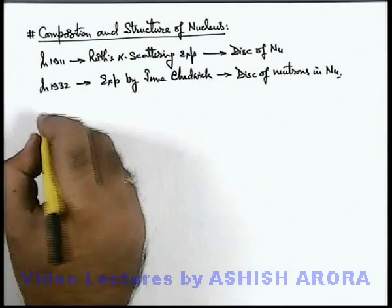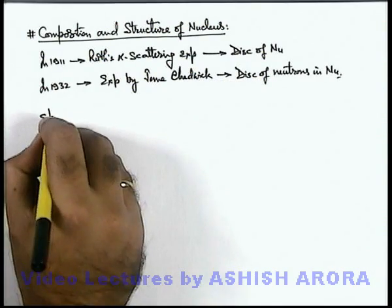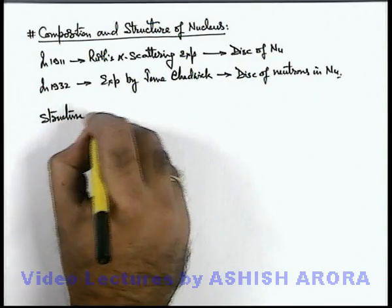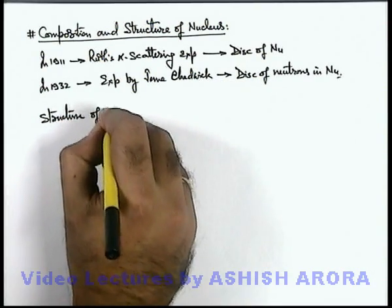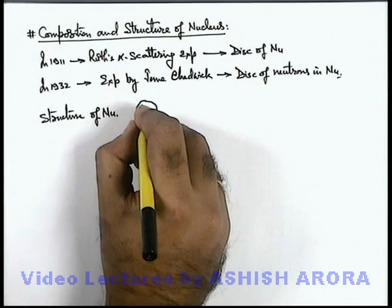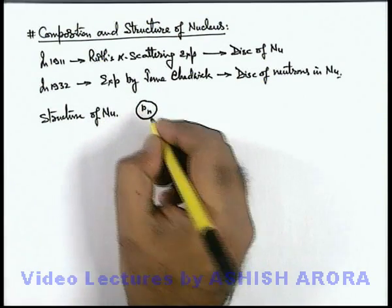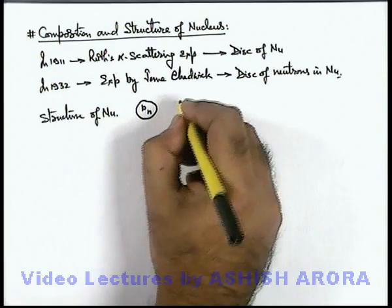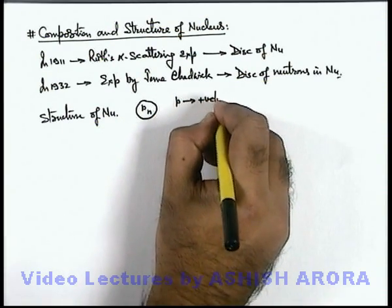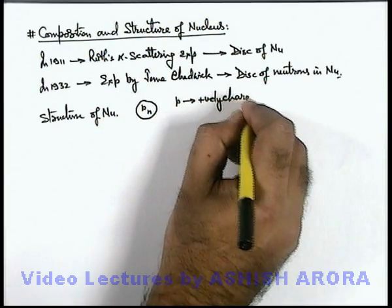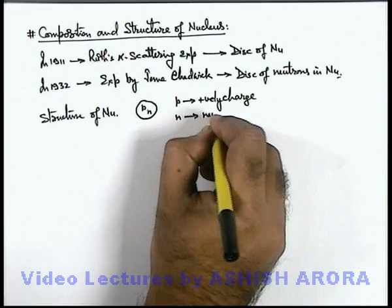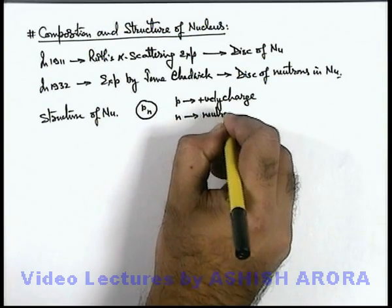So the approximate structure of the nucleus was assessed: inside the nucleus there are two kinds of particles, which are protons and neutrons. Protons are positively charged, and neutrons are electrically neutral.